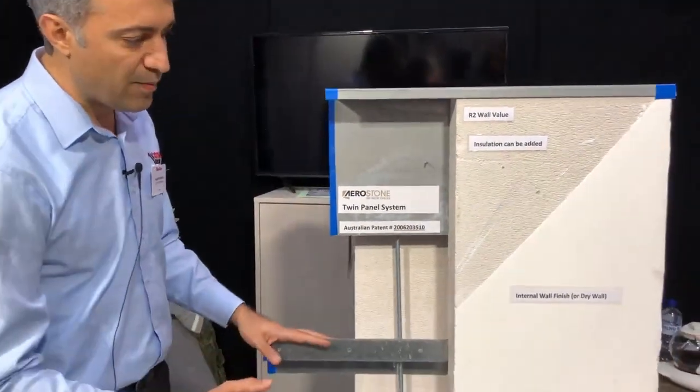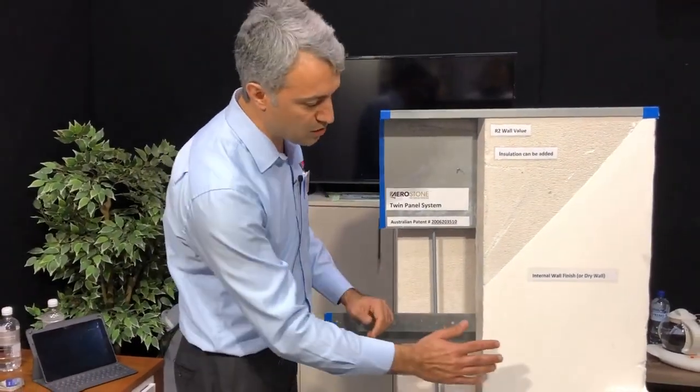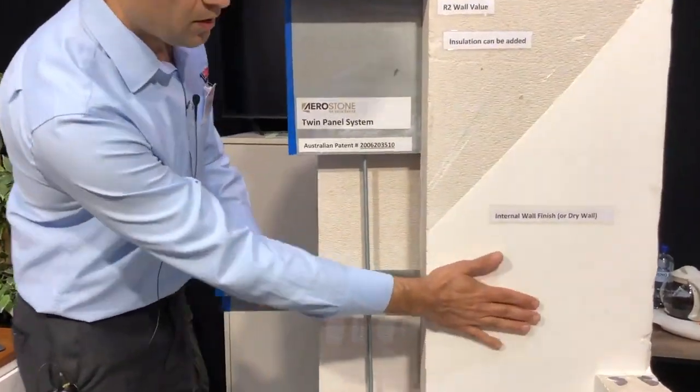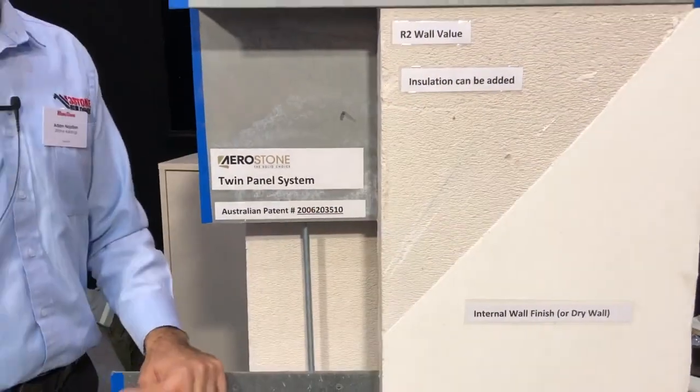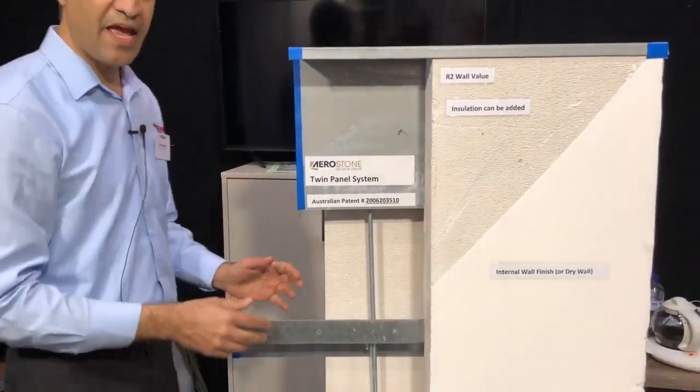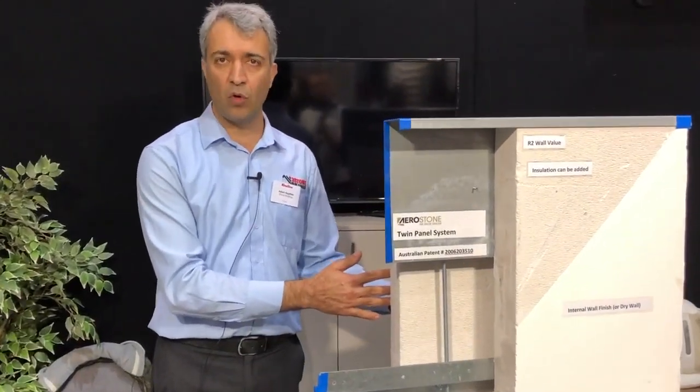Now this system has different finishes on the inside. You can have this normal smooth white finish, or you can fix gyprock directly into the system. From the outside, you can have acrylic render or you can have roll-on paint.